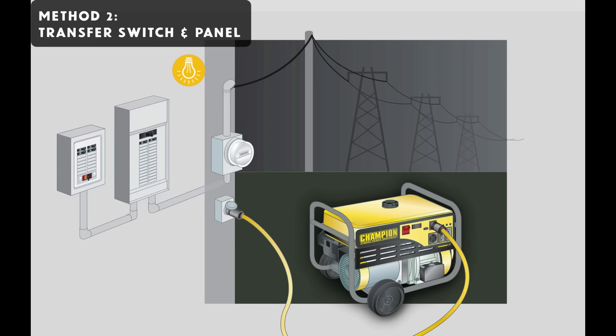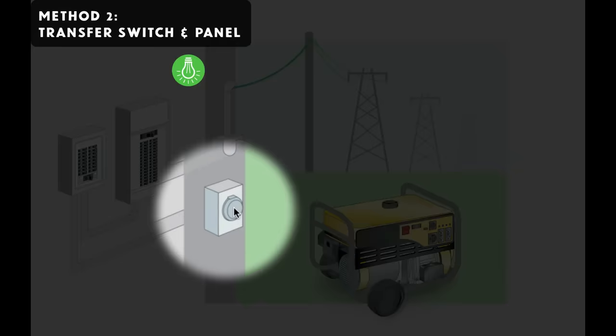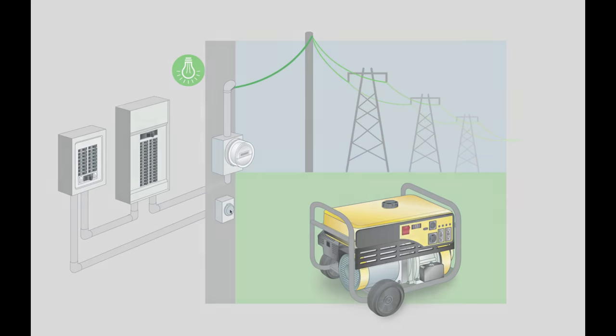And when the power is restored, you start by switching this switch back off again, back to the grid position, and then you shut off the generator and you remove the cable. And the little door here, the weatherproof door, is closed and everything's sitting, waiting for the next outage for you to connect your generator and get things working again.